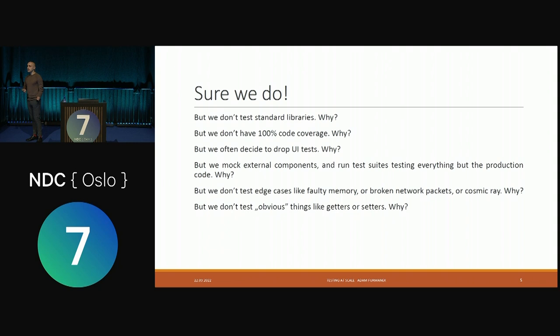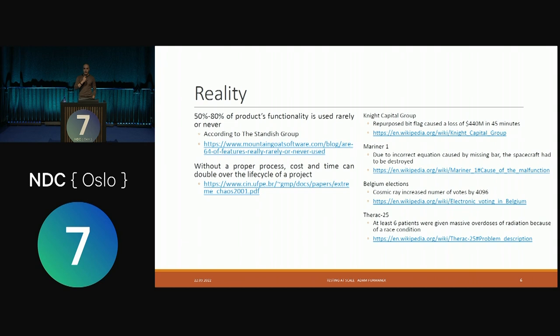Not to mention we don't test edge cases we consider unlikely — like cosmic rays. Not a single hand went up for that. You might think, why would we ever test for that? And the answer is that reality is actually a contradictory part here.